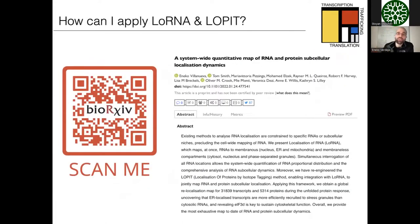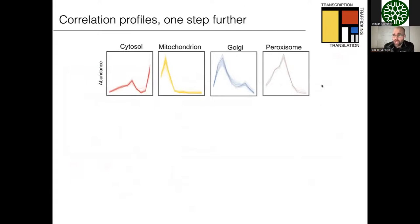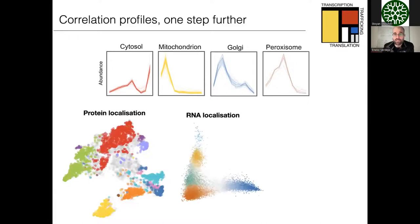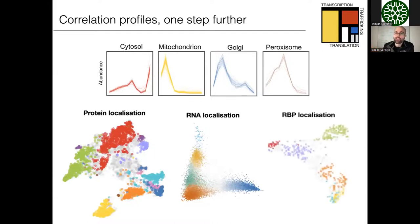All the details are available in the preprint — you can scan the QR code or Google it to find the publication, and hopefully the official peer-reviewed publication will be out very soon. Just to finish: can we use the same correlation profile approach, now in cross-linking conditions, to generate functional maps of where RNA-protein interactions are happening? Yes we can. I think I've been speaking for quite a long time, so I'm ready for your questions.